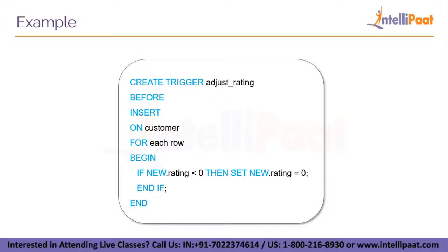Using FOR EACH ROW — a mandatory statement — and within the BEGIN and END block, the logic is: IF NEW.rating < 0, THEN SET NEW.rating = 0; END IF. That is, if the value entered is negative, it converts it to zero. This is the trigger logic.